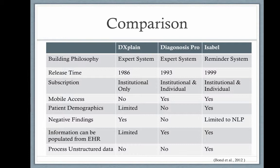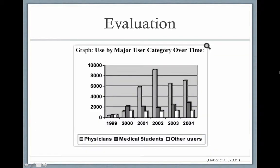Kara will discuss evaluation and some future expectations. This graph shows use by major user category of DXplain from 1999 to 2004 in America. Use by physicians has grown dramatically since 2000. The large increase from 2000 to 2001 reflected the addition of DXplain to a trusted medical reference website aimed at individual physicians. Increased use by first- and second-year medical students and nurses reflects in part increased use of DXplain as a formal class assignment at several hospitals and medical schools.